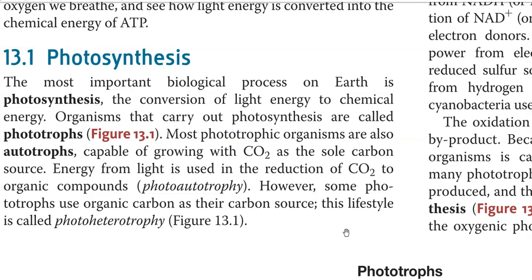Phototrophic organisms are again divided into two groups. One is photo-autotrophic in nature, that is, they use energy from sunlight and this energy is used for reducing the atmospheric carbon dioxide into cell carbon or organic compounds. The other group is photo-heterotrophy — those organisms that use energy from sunlight, whereas carbon is not synthesized from carbon dioxide but is obtained from pre-formed organic carbon sources such as acetate. A classical example here is Rhodospirillum.